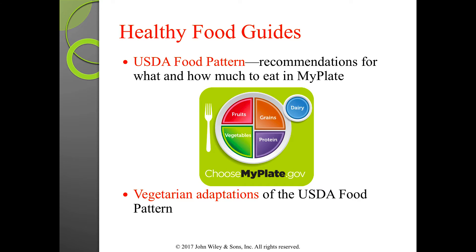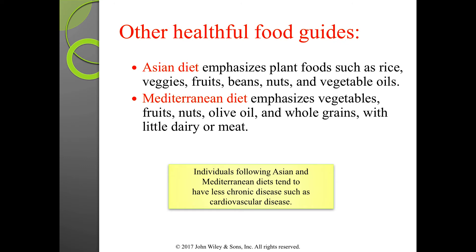There are various adaptations of MyPlate for vegetarian, Mediterranean, and Asian styles. The Asian diet emphasizes more plant food such as rice, veggies, fruit, beans, nuts, and vegetable oils. The Mediterranean diet emphasizes vegetables, fruits, nuts, olive oil, and whole grains with little dairy or meat — meat is perhaps a once or twice a month protein source. Both diets show less cardiovascular disease than the U.S. population, which is thought to be due to their emphasis on plant-based eating.